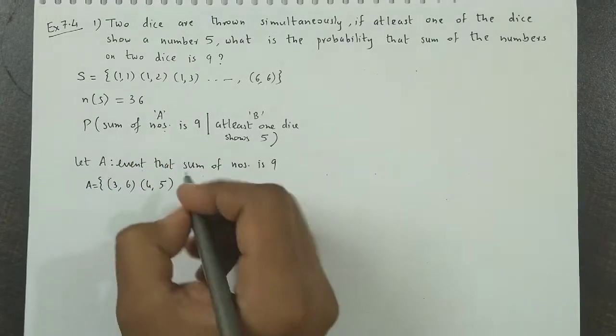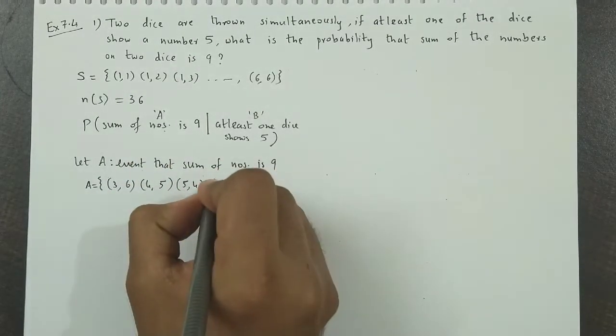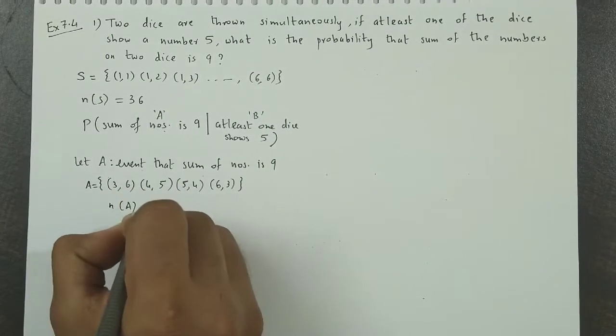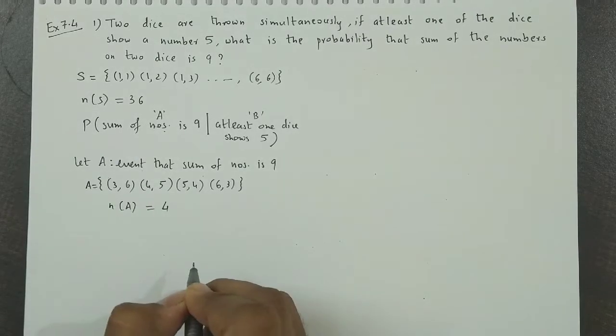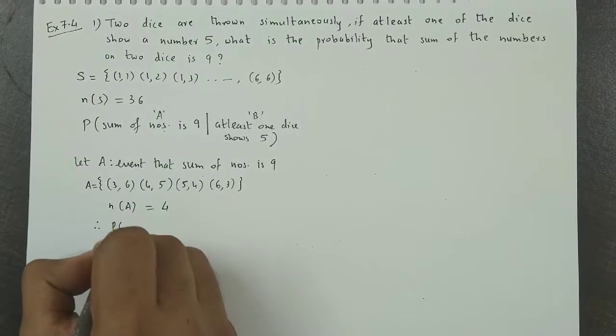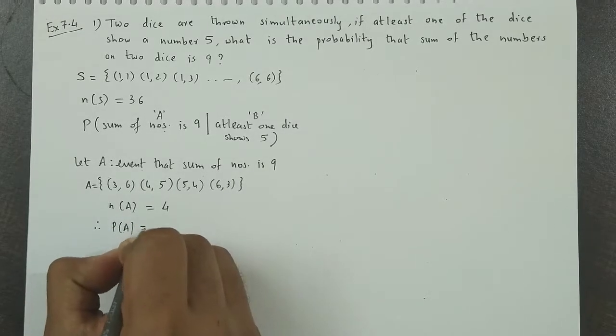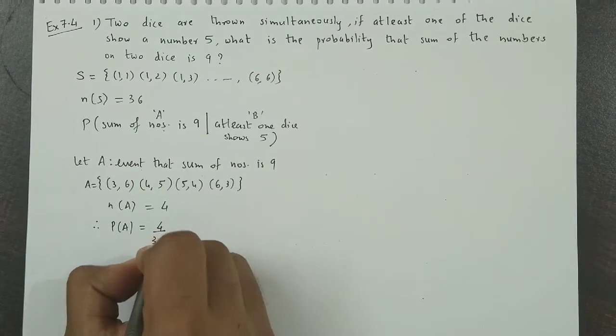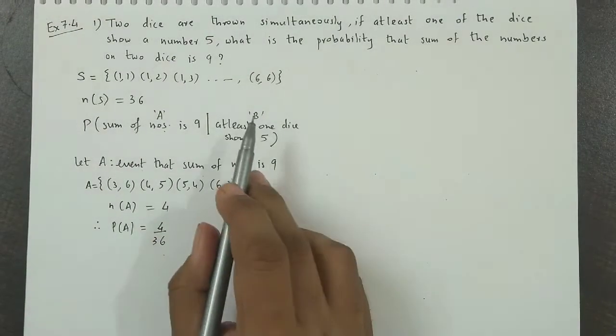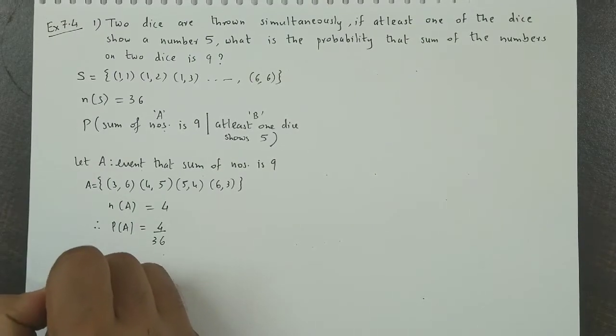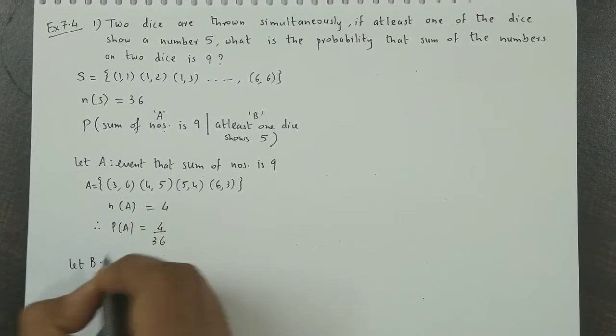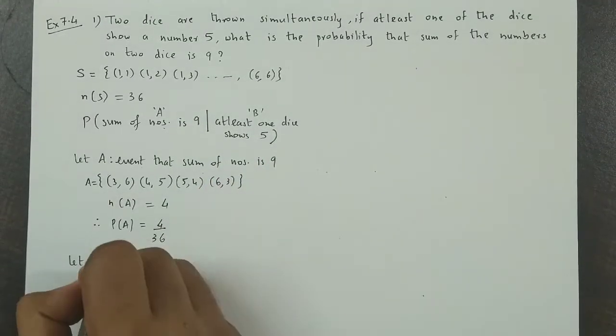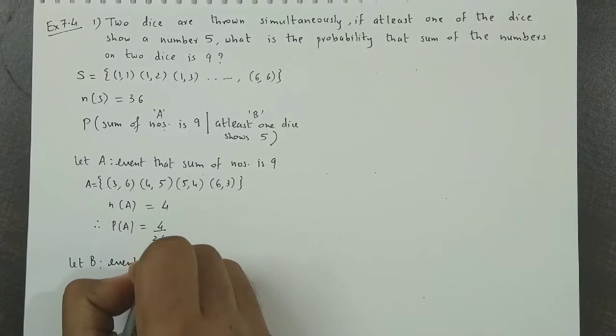(5,4), and (6,3). So the probability of A: we have n(A) equals 4, therefore P(A) equals 4/36.